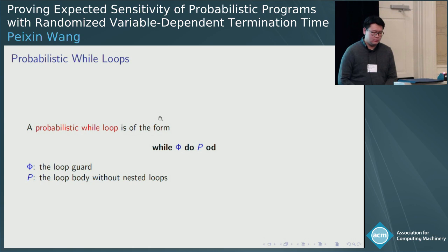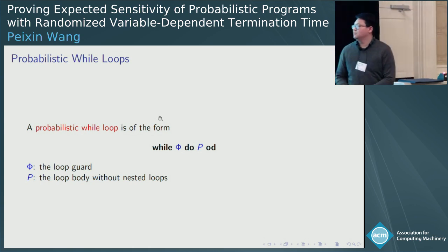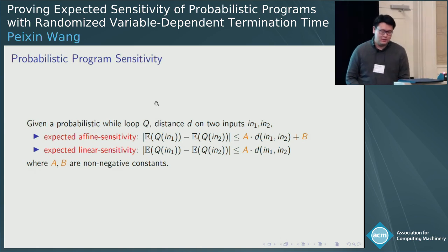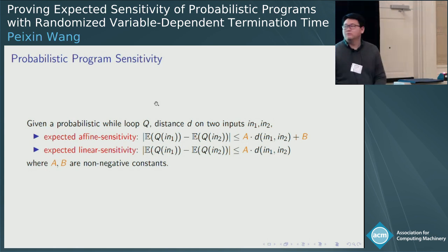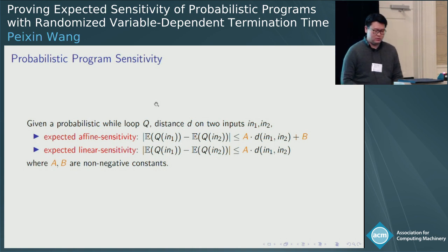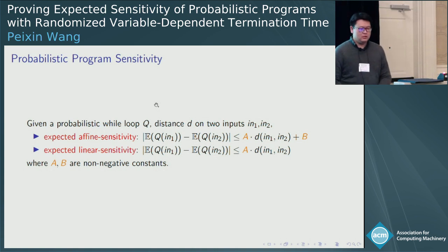In our work, we focus on probabilistic while loops of the form: while phi do P, where phi is the loop guard and P is the loop body without nested loops. Given such a while loop Q, we define two types of expected sensitivity. The first is expected affine sensitivity: the difference in the expected outcomes is no more than A times the distance between inputs plus B. If the constant B equals zero, we call it expected linear sensitivity.